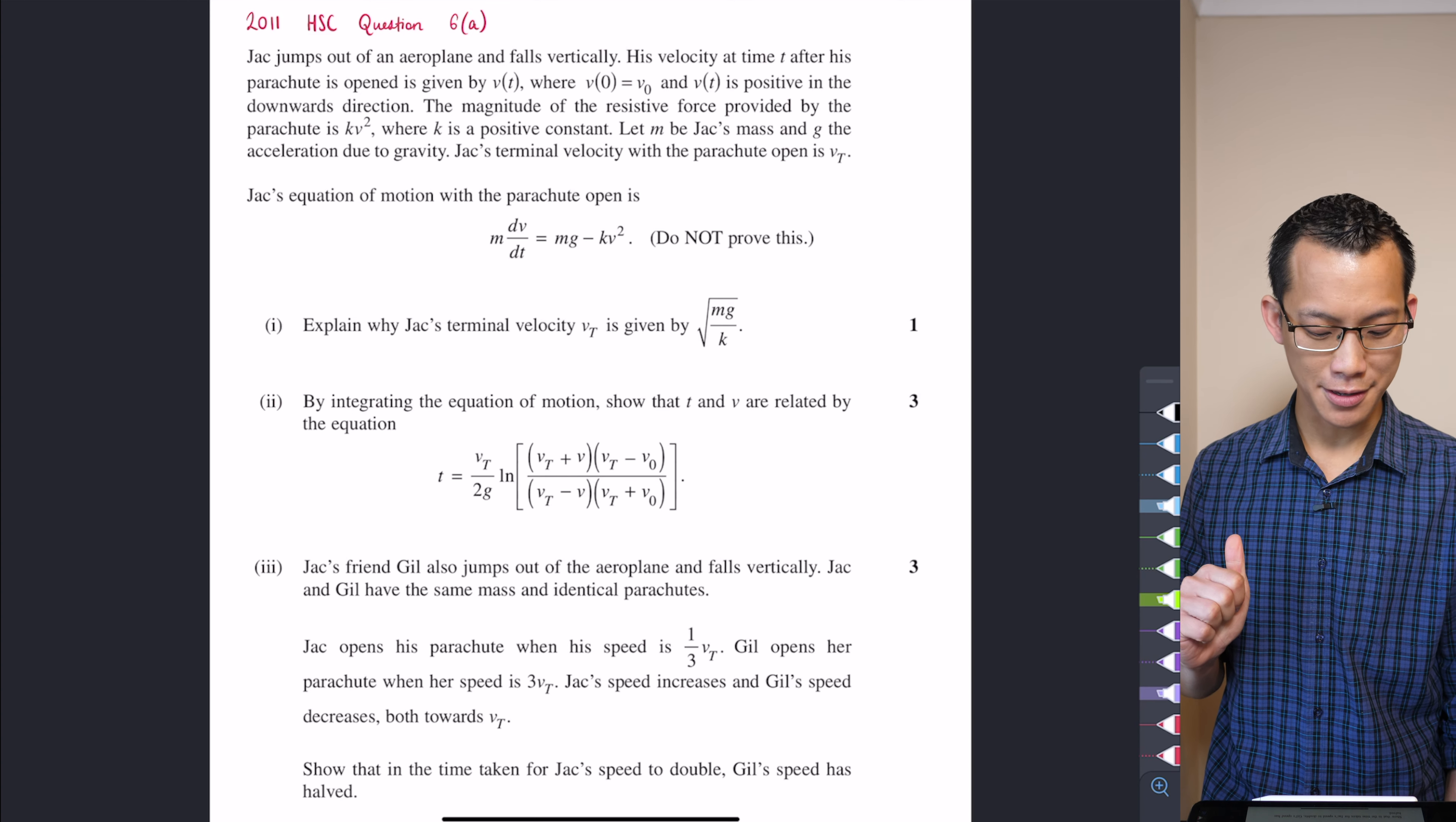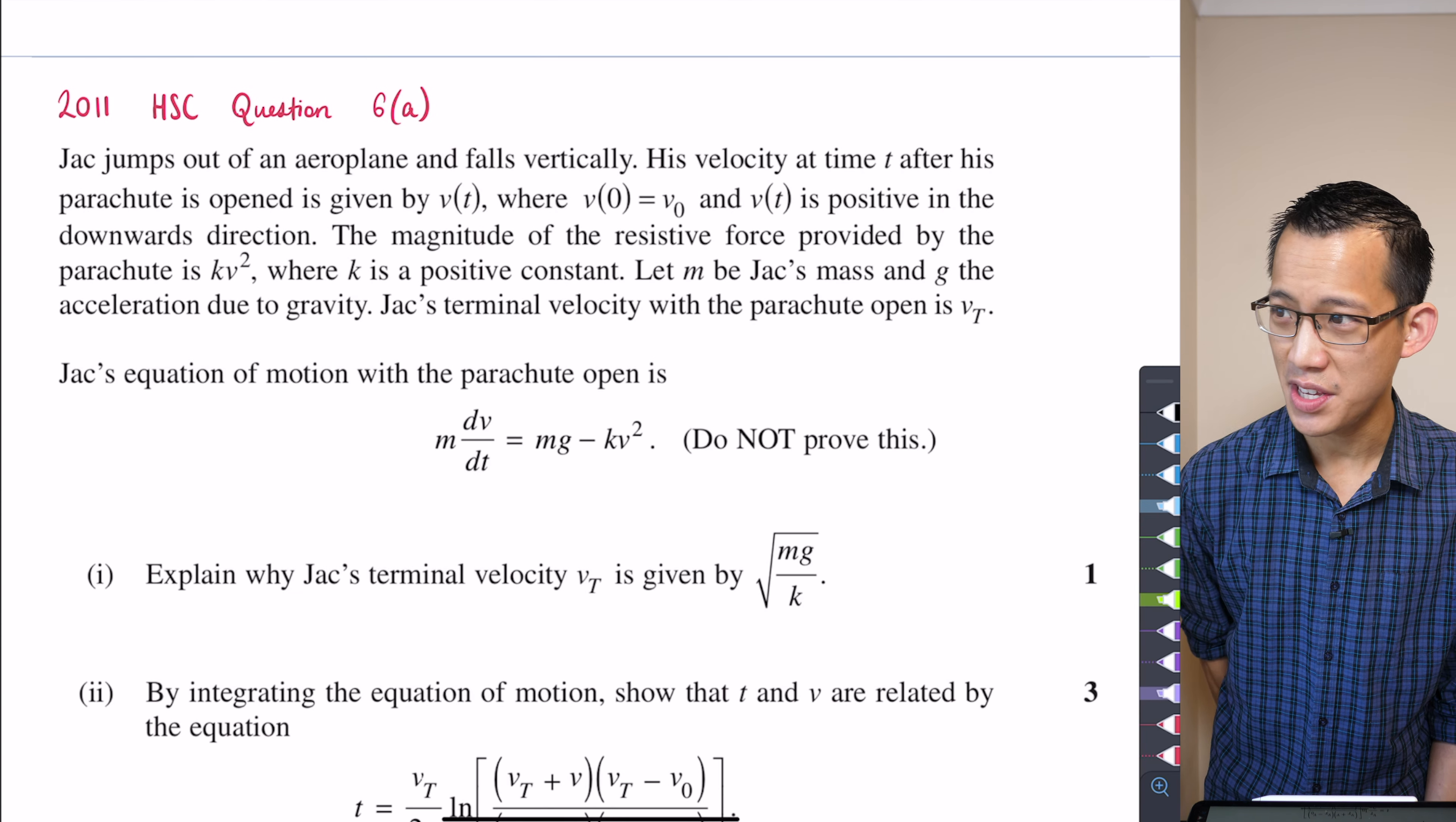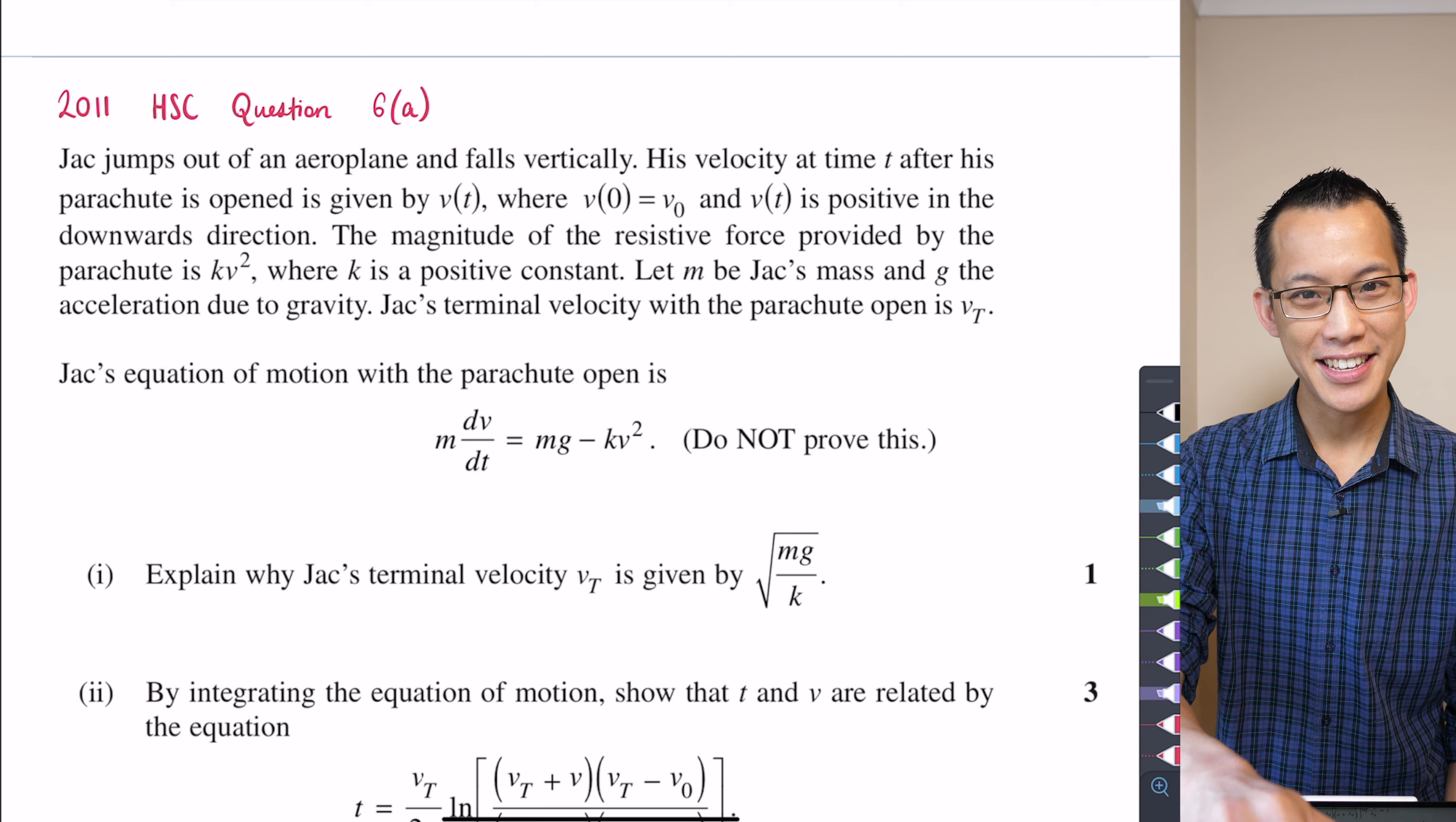So that's the first thing, it was something that wasn't done well, even though there's no reason for that. By the way, if you're wondering 2011 question 6a, you're like question six, isn't that multiple choice? I said this was going a while back. This was before there was multiple choice in the Extension 2 paper.